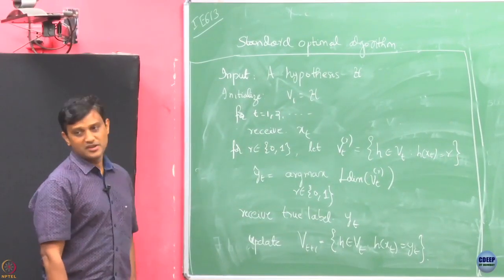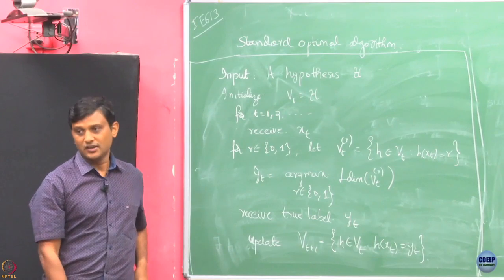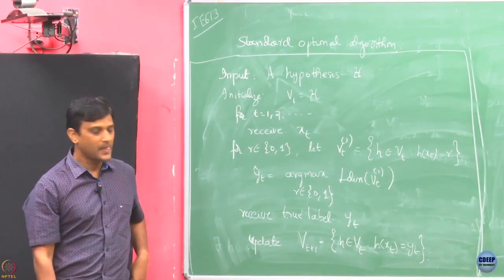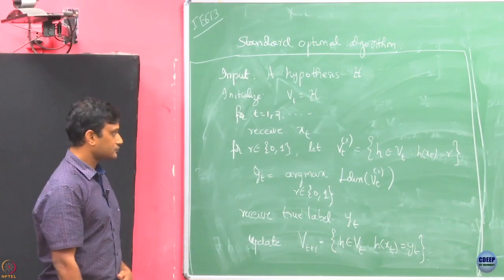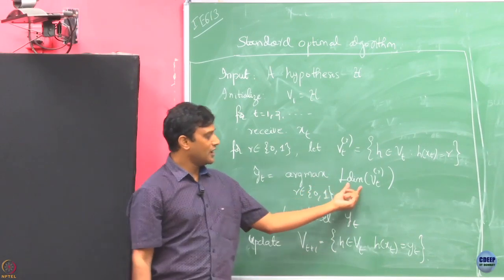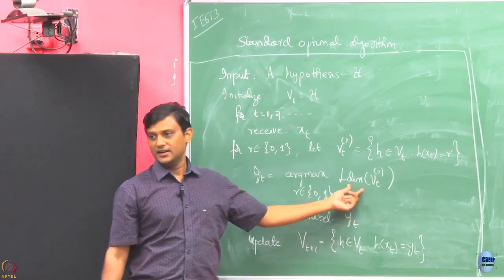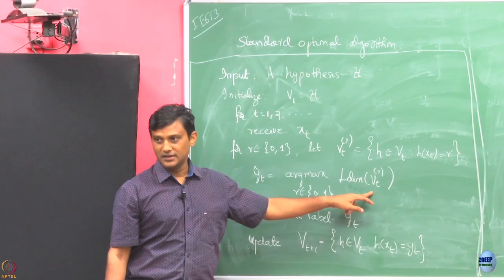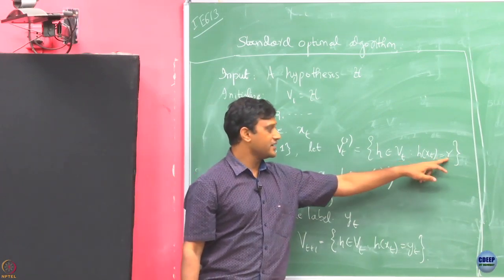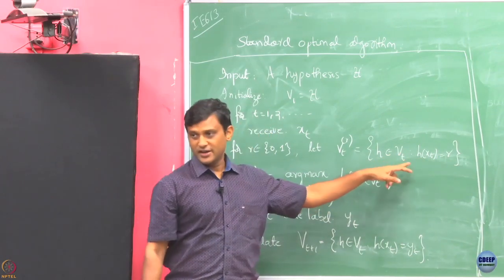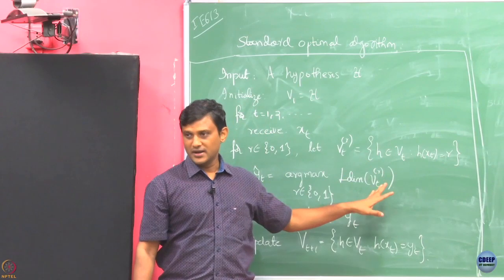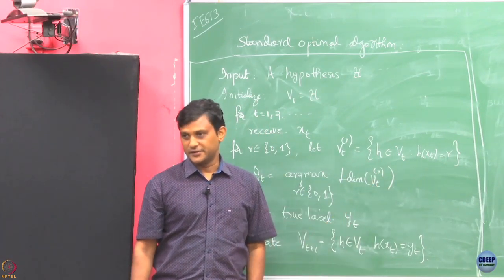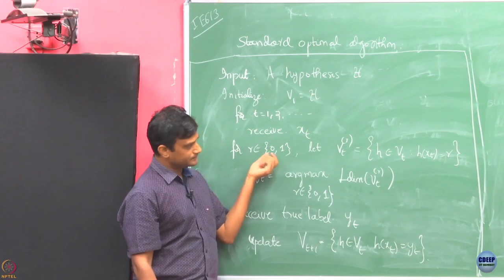This algorithm is almost the same as the Halving algorithm, except that here you are going to compute the L-dimension of the hypothesis class corresponding to those that predicted label 0 and label 1, and then make your prediction based on that.